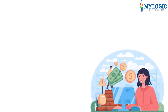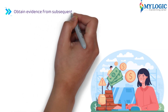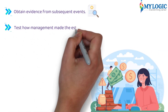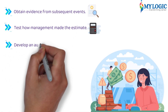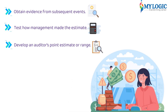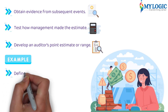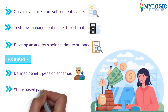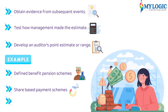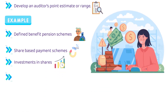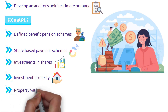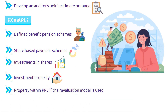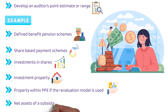When responding to the risk of material misstatement in accounting estimates, the auditor must perform the following procedures: obtain evidence from subsequent events; test how management made the estimates; and develop an auditor's point estimate or range. Examples of balances where estimates are relevant include: defined benefit pension schemes; share-based payment schemes; investments in shares; investment property; and property within a revaluation model if the revaluation model is used, as well as the net assets of a subsidiary at the acquisition date.